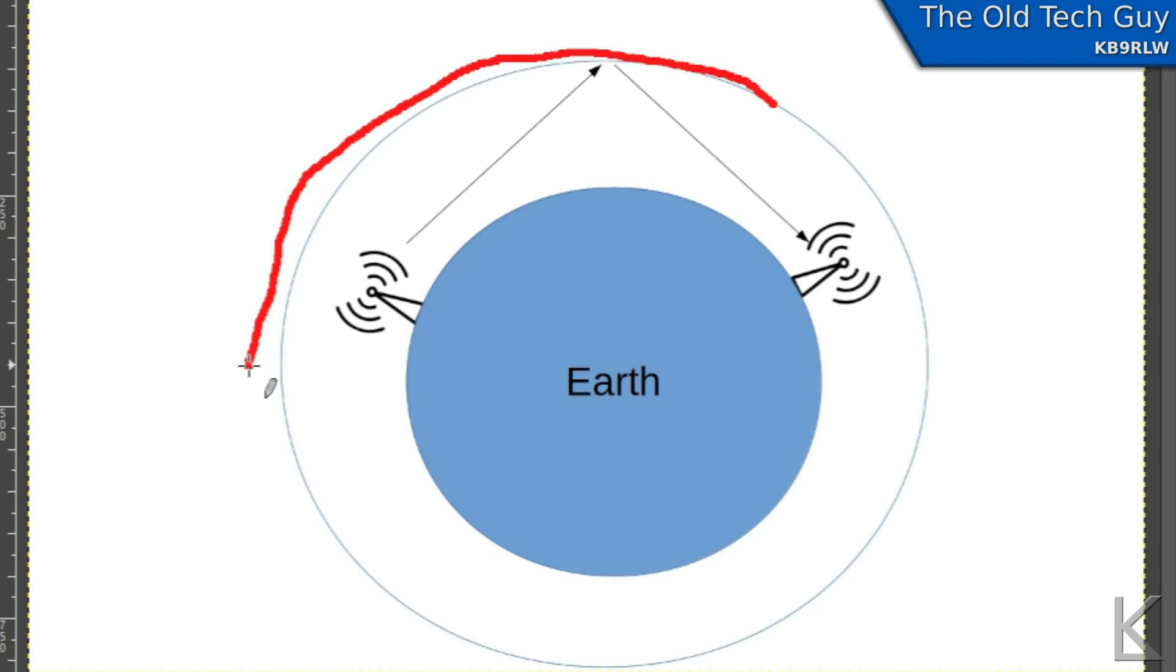There's different layers of the ionosphere, and they affect radio frequencies at different frequencies at different times of the day. There's all kinds of information out there on how the ionosphere works for different bands, different solar activity, and so on and so forth. But for the sake of this particular example, we're just going to simplify it down to this is how radio waves bounce.